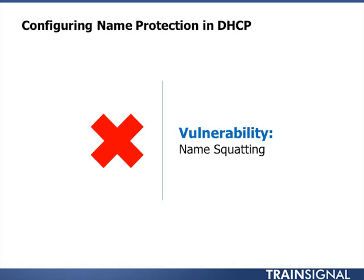Name squatting is where one computer comes on the wire, calls DHCP, gets its information registered in DNS — everything is great. But then a second computer with the same computer name comes on the wire, calls DHCP, registers its information in DNS, and overwrites the data left behind by the prior client. Suddenly, computers that wanted to call DNS with the name of the first computer and get its IP address instead get the IP address of the second computer. The first computer suddenly becomes unreachable. So let's take a look at how we resolve that interesting challenge.